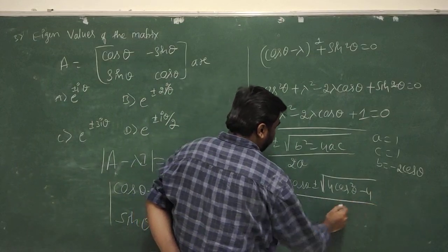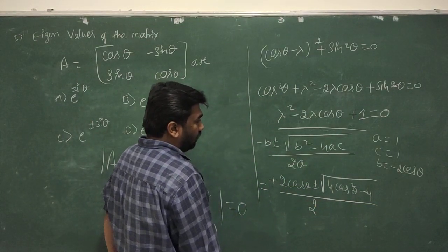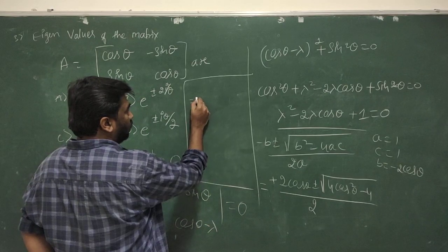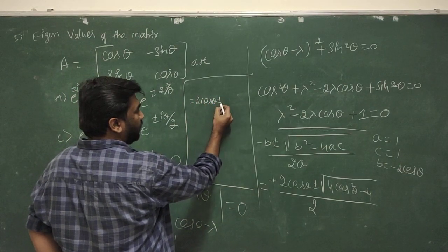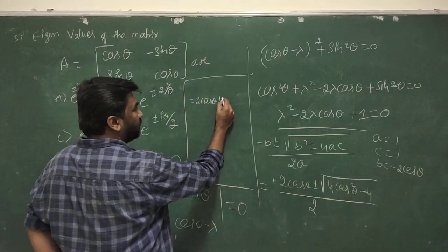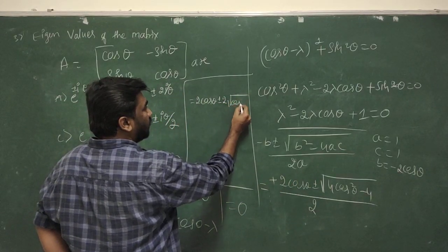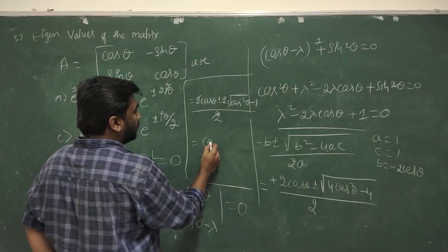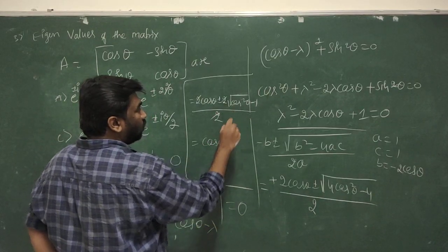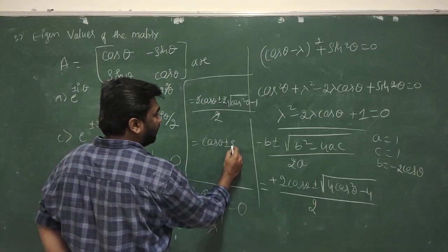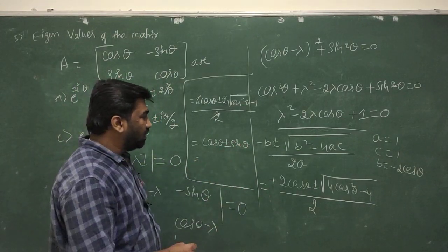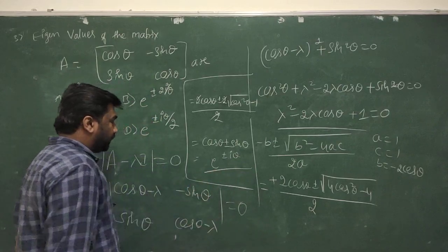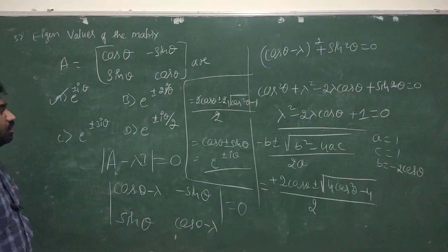Dividing by 2, we get λ equals cos θ plus or minus √(cos²θ minus 1). Taking 4 as common inside the root gives 2√(cos²θ minus 1) divided by 2, which is √(cos²θ minus 1) equals ±i sin θ. So λ equals cos θ ± i sin θ, which can be written as e^(±iθ). Option A is correct.